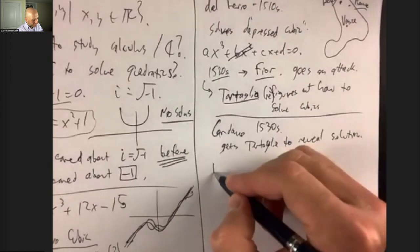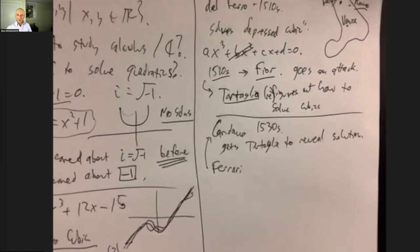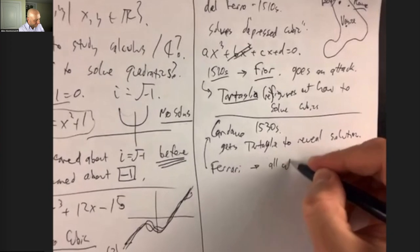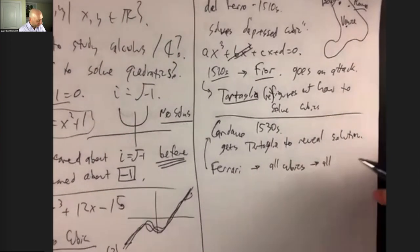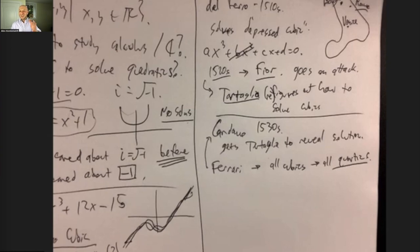Not long thereafter, Ferrari — a young man — shows up on Cardano's doorstep wanting a job. Cardano says: wash my floors, clean my windows. Ferrari turns out to have a real aptitude for mathematics and soon becomes Cardano's student and collaborator. Cardano reveals the depressed cubic to Ferrari — it's in his notebook. Ferrari and Cardano together figure out how to solve all cubics, and then eventually all quartics as well. They have no interest in keeping this secret — they want to reveal it to everyone. Yet they're not allowed to, because the solution to the depressed cubic belongs, by oath, to Tartaglia.